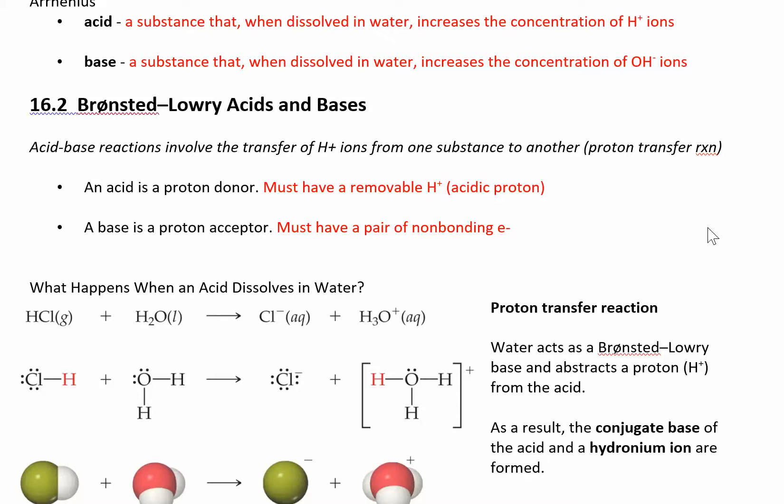The reason why we call an H plus a proton is because if you think about what a hydrogen atom is, a hydrogen atom has one proton and one electron and that's it. And so if you got rid of the electron, now you have an H plus ion and all it really is is a proton. So we call H plus just an acidic proton.